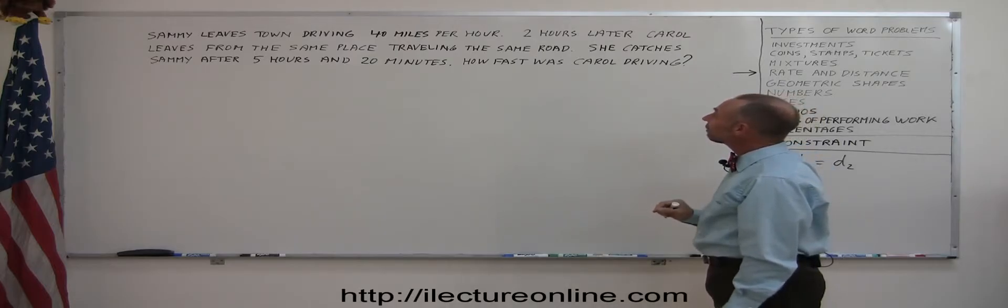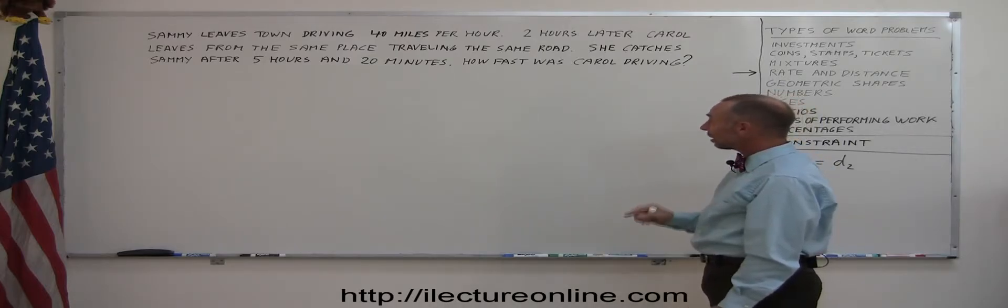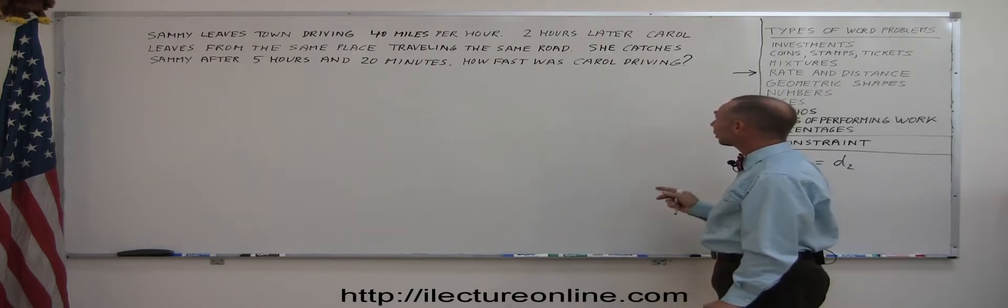Sammy leaves town driving 40 miles per hour. Two hours later, Carol leaves from the same place traveling the same road. She catches Sammy after 5 hours and 20 minutes. How fast was Carol driving?